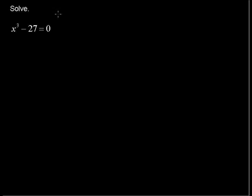Solve x to the third power minus 27 equals 0. You might be able to see right away that 3 to the third power is 27, so 3 to the third power minus 27 does equal 0.